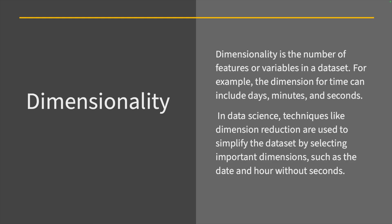As promised, we're going to dive deeper into dimensionality. So here dimensionality is the number of features or variables in a data set. For example, the dimensions for time can be days, minutes and seconds. However, in data science, techniques like dimensionality reduction are used to simplify the data set. So when you want to reduce the complexity, you can reduce the dimensions by selecting important dimensions, such as date and hour without seconds, because the context is saying that, hey, we just need to know what day and what hour it was. So we can reduce the complexity by taking off the dimensionality of seconds in this case.